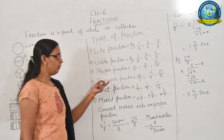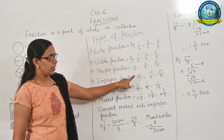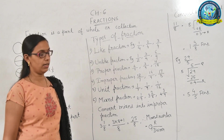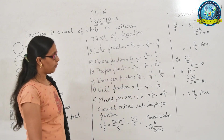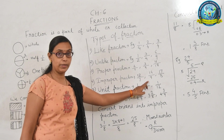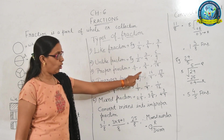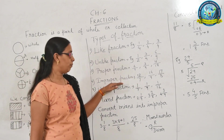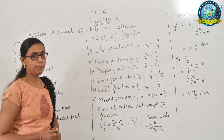The next type is improper fraction. When the numerator is greater than the denominator, the fraction is called an improper fraction. Examples: 12 upon 7, 14 upon 9, and 17 upon 8. Here all the numerators are greater than their denominators. Jab numerator, denominator se bada ho, to usko improper fraction bolte hain.